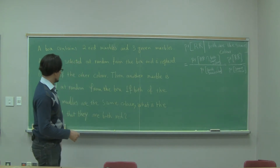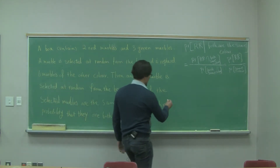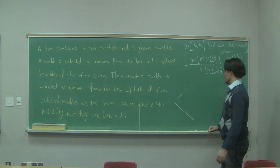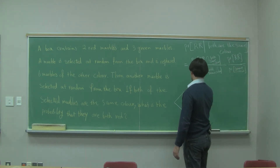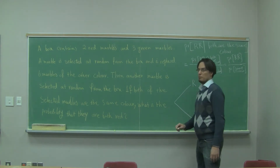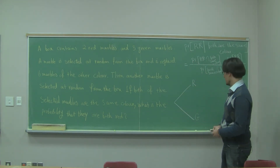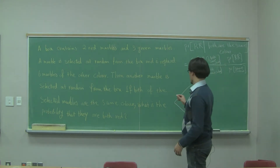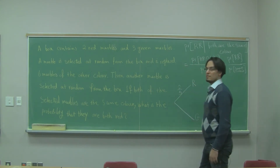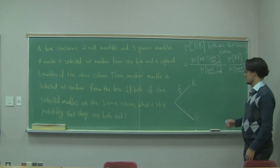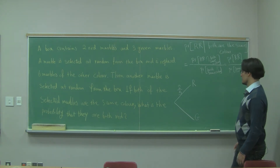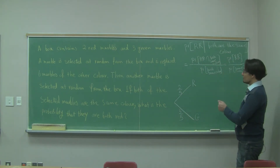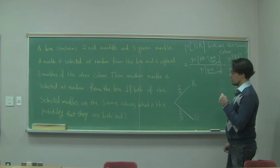Now I need to use the information given. I have a two-stage stochastic process. In the first experiment, I take out a marble from the box — it's either red or green. Originally there are only two reds out of five total, so the probability of getting a red is 2/5, and the probability of getting a green is 3/5.